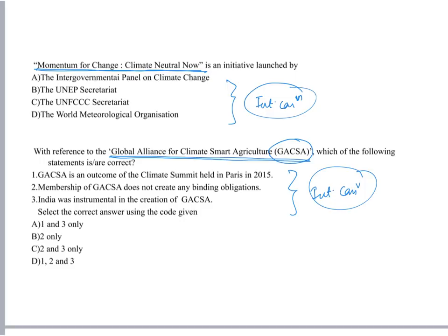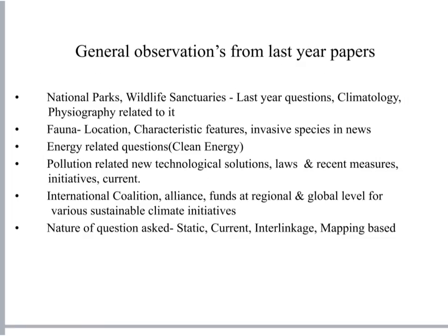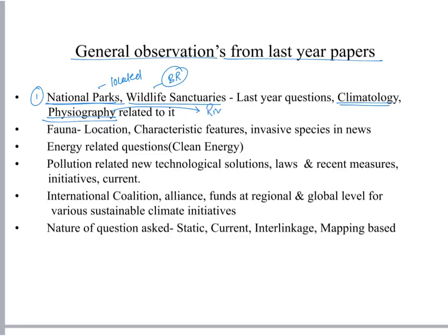These were the questions from 2018. Some general observations from 2019 to 2018: UPSC is generally focusing mainly upon national parks and wildlife sanctuaries — where is a particular national park located, what are the various national parks and wildlife sanctuaries in a particular biosphere reserve, what is the climate of that national park, and what is the physiography — is there any river, mountain range? Is there any critically endangered animal listed by IUCN present in that national park?